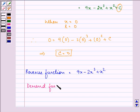The demand function is found by dividing the revenue function by x. That is (9x - 2x³ + x²)/x, which equals 9 - 2x² + x.